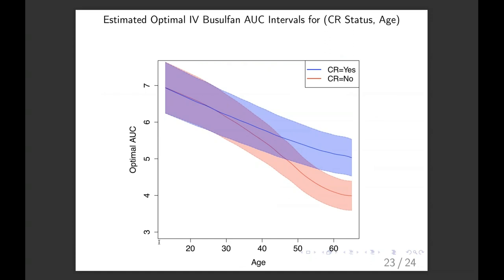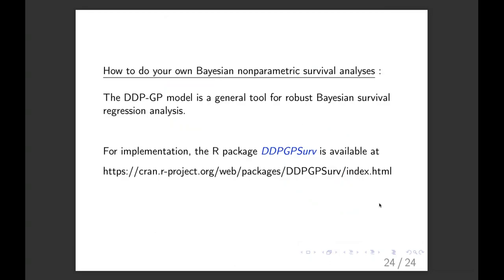But here's a really neat graphic. Yen Shinshu cooked this up along with the other stuff. As a function of age, the optimal AUC is in blue for the people that are in CR at transplant, and in pink for the people that are not. And you see the intervals are really the same up until they're about 30. But as the patients get older, the optimal interval goes down for the patient with active disease. So there's a general package, DDP-GPSERV that allows you to do Bayesian nonparametric survival analysis for any data set. And it's extremely robust. So I highly recommend it.